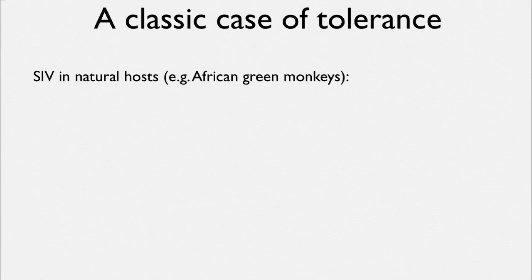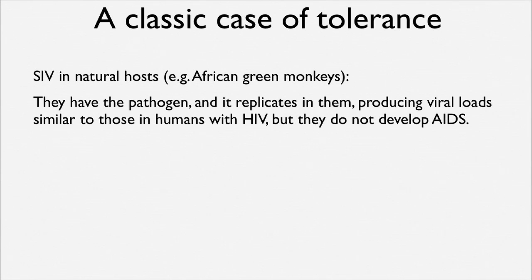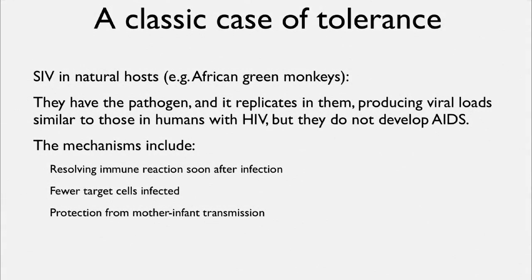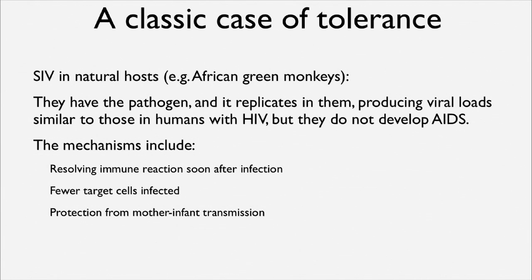A classic case of tolerance is simian immunovirus—not HIV, but simian immunovirus in its natural host, African green monkeys. They carry this viral pathogen; it replicates in them and produces viral loads similar to the amount of virus circulating in a human who has AIDS. But the monkeys do not develop the disease. Their mechanisms include: they can resolve the immune reaction soon after infection, there are fewer target cells infected, and they are protected from transmission. These are diseases where the virus infects T cells—cells in the immune system—so they change the sensitivity of their immune cells to infection by the virus.